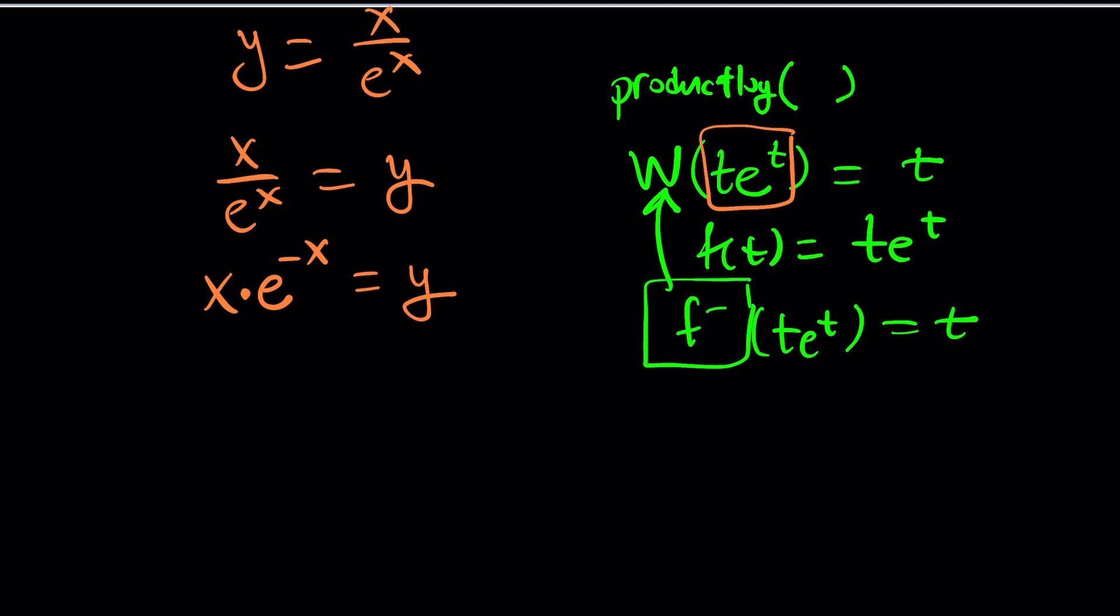But in this case we want te^t. So this should be our t, but we don't have that t here because t is e^(-x). So what should we have instead of x? We should have -x. How do we do that? Easy. Multiply both sides by -1 or just insert the minus sign because that's a product.